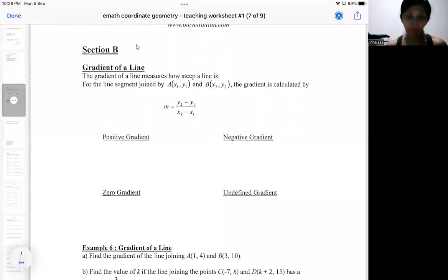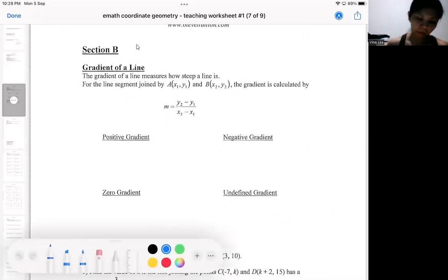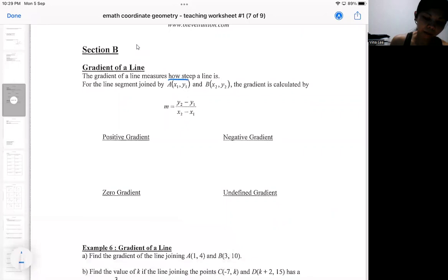In this section, we are looking at the gradient of a straight line. Generally, gradient measures how steep a line is. We can use a formula. This formula shouldn't be too new to most of you. You should have learned this formula since sec one. This gradient formula makes use of two coordinates to calculate the steepness. That is the mathematical formula for the gradient.